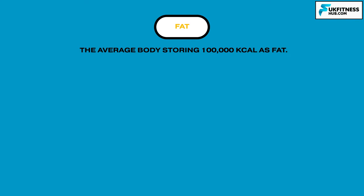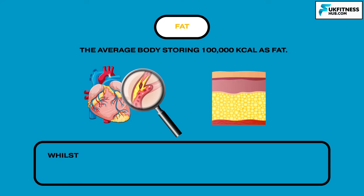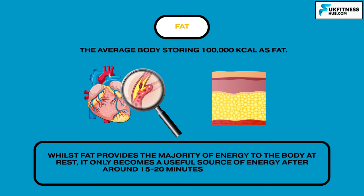Fat is stored all over the body in places such as the heart, under the skin, around the kidneys, and muscles. Energy becomes available from fat slowly because it takes a long time for it to be broken down. Whilst fat provides the majority of the body's energy at rest, it only becomes a useful source of energy after around 15 to 20 minutes of exercise. Prior to this, cells use glycogen as their main source of energy because it is more readily available.